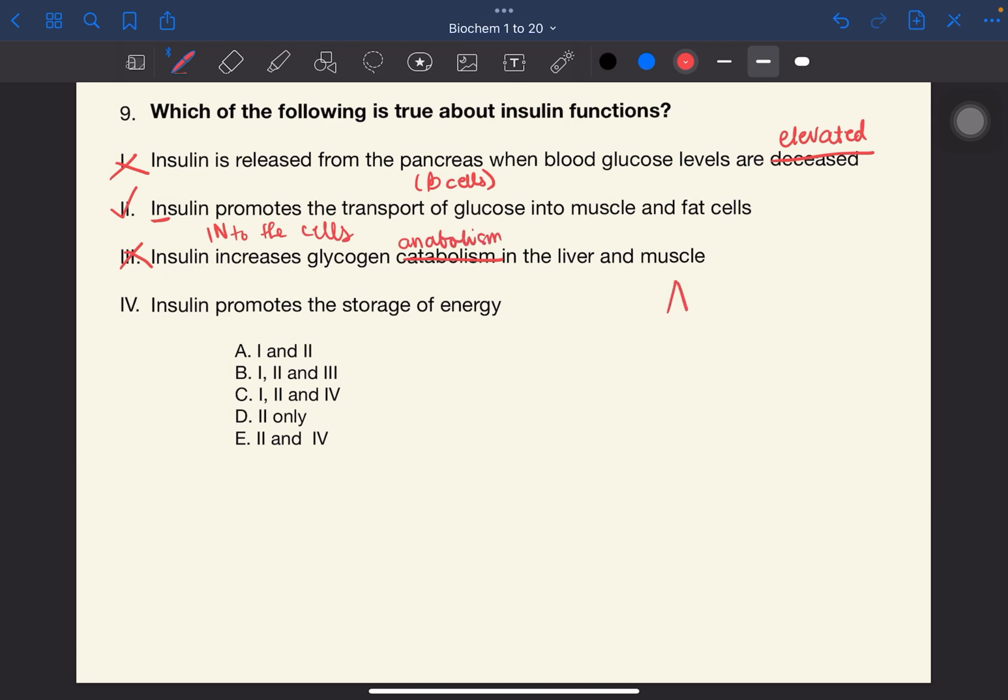To recall, yung mnemonic ko dito is A, B, C, D. Anabolism builds, catabolism destroys. So in the case of insulin, glycogen is built up in the liver and muscles. And four, insulin promotes the storage of energy. This is true. This is stored yung glycogen. So the answer to this one is E, 2 and 4.